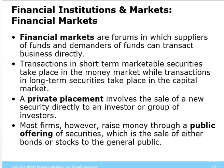Financial markets are a forum where suppliers of funds get together with demanders of funds. Think of the stock market as an example. Marketable securities are created — like stocks and bonds — and money can flow between demanders and suppliers. Outside the financial markets, we have private placement activity facilitated through investment banks, where a very rich person might say, 'I want to buy 10% of this company,' and give them a set amount of money — like the show Shark Tank.